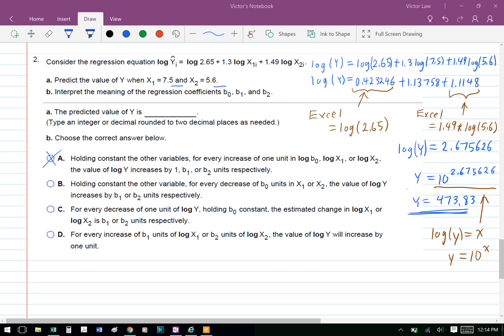Part B: choose the correct answer below. The answer is A: holding constant the other variables, for every increase of 1 unit in log b₀, log x₁, or log x₂, the value of log y increases by 1, b₁, or b₂ units, respectively.